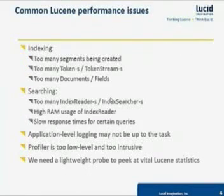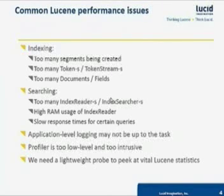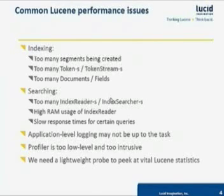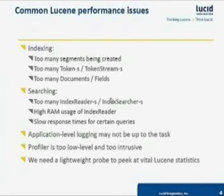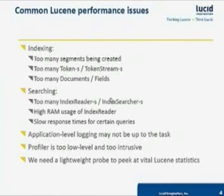These symptoms are related to a range of well-known problems in application design or in Lucene configuration. Indexing speed may deteriorate if you create too many segments, or if you create too many tokens, documents, and field instances. Few people realize that it's actually possible to reuse these instances. Your application may be just fine if you create one document, as many fields as you need per document, and one token.